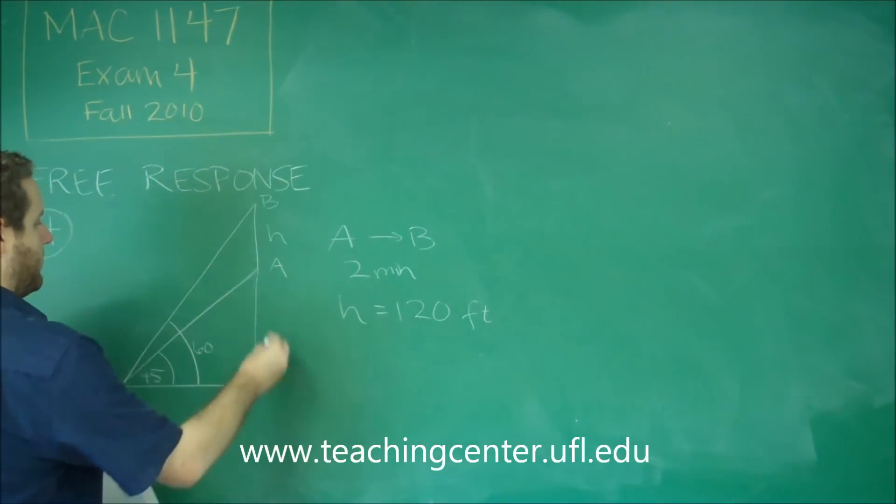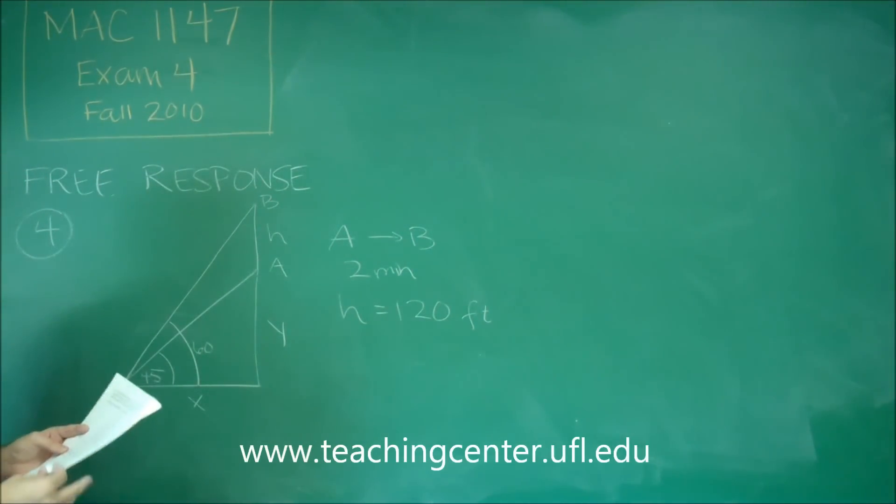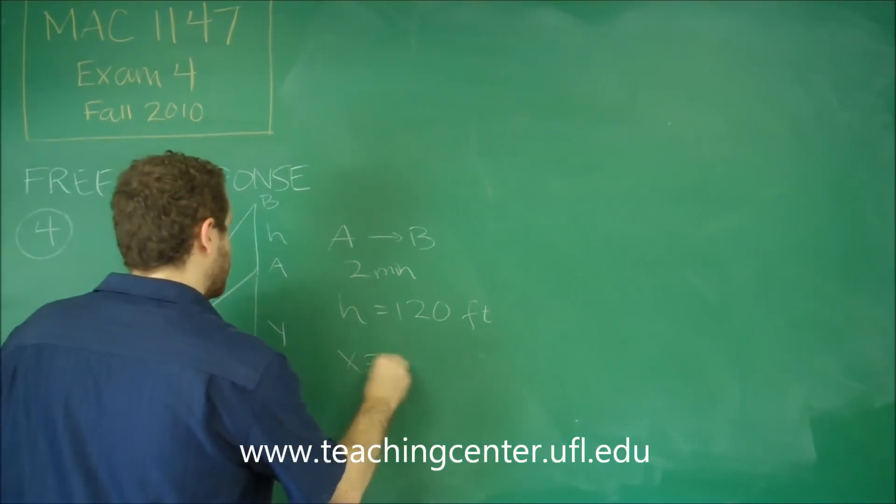Okay, so the last thing we can solve for, we call this part Y, this part X. You can see here that if we have a 45 degree angle, 45 degree angle means that X and Y have to be the same thing. So that's another thing you can write.